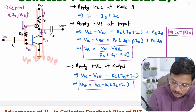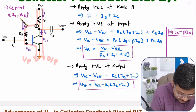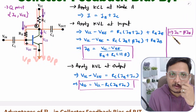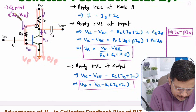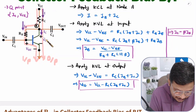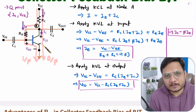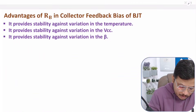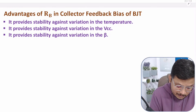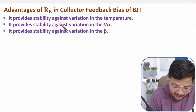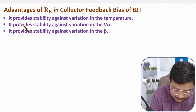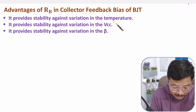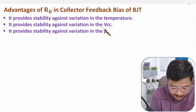Now based on IC and VCE equations we need to understand the stability of the operating point, which is the Q-point. Because of RB there are several advantages: it provides stability against variation in temperature, stability against variation in VCC, and stability against variation in beta.